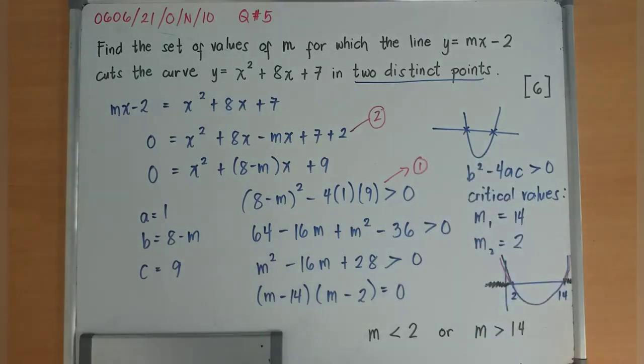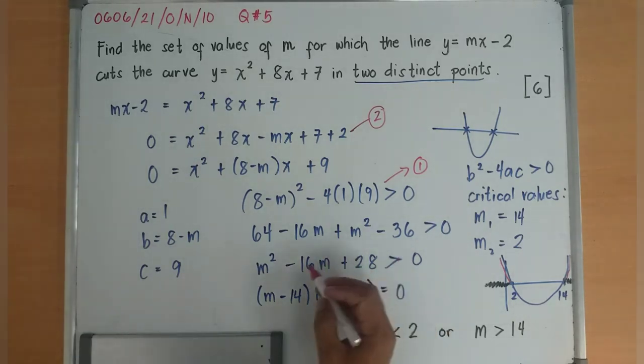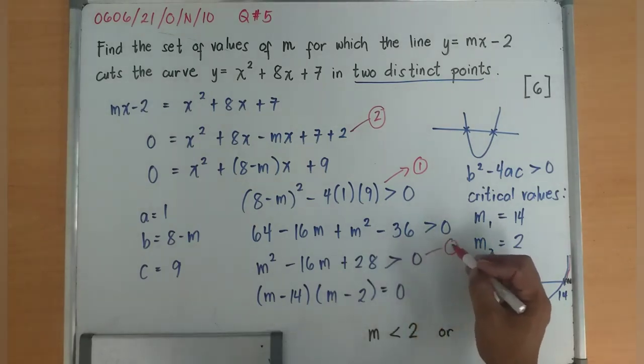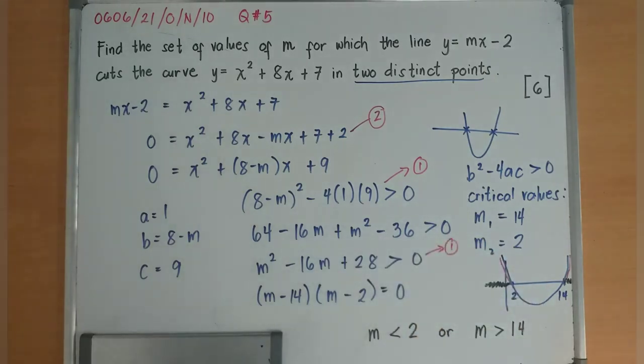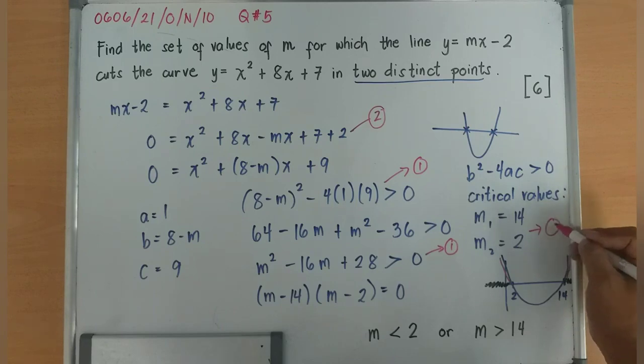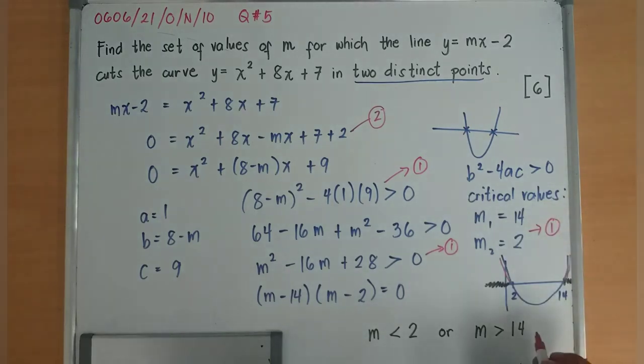And you will get 1 mark for finding the critical values. And finally, you will get 1 mark for getting the set of values.